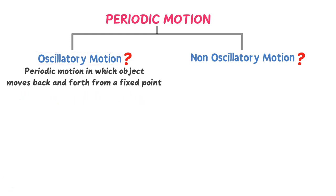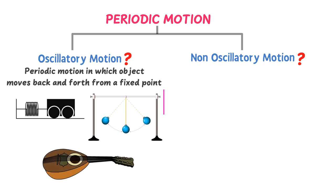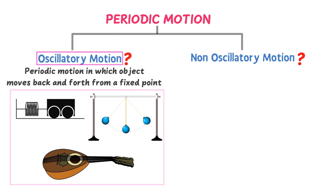For example, the motion of a mass attached to an elastic spring, the motion of a simple pendulum, and the strings of a guitar — all these objects move back and forth from a fixed point, so they are all in oscillatory motion.